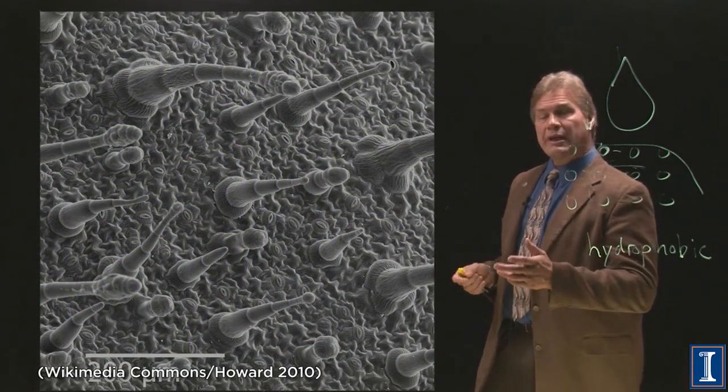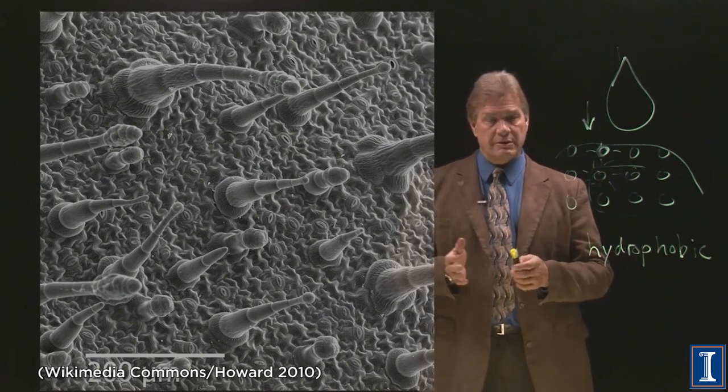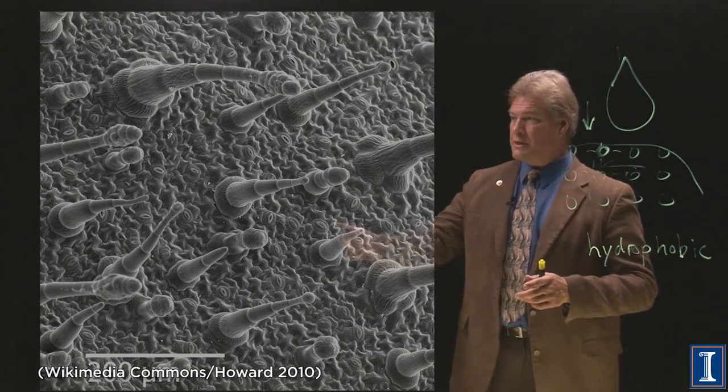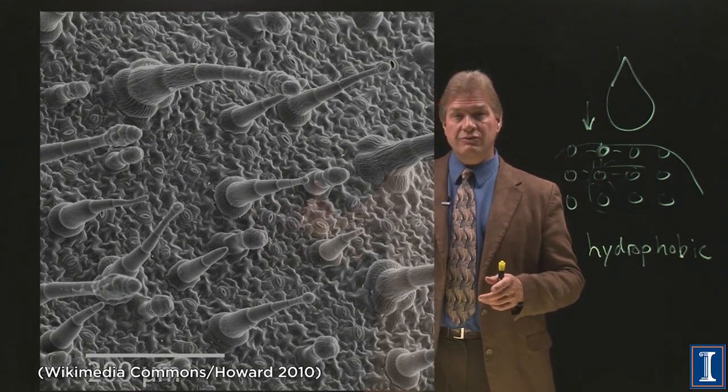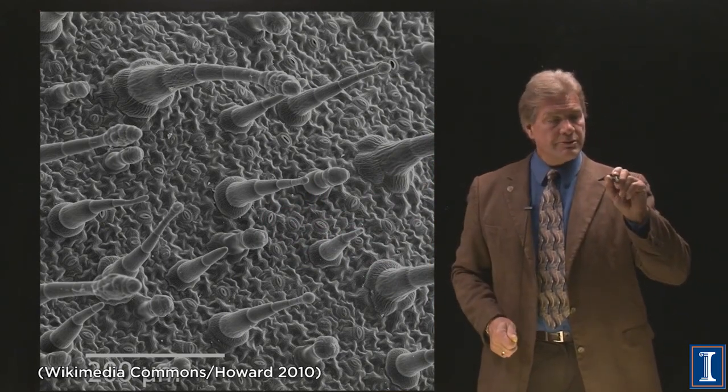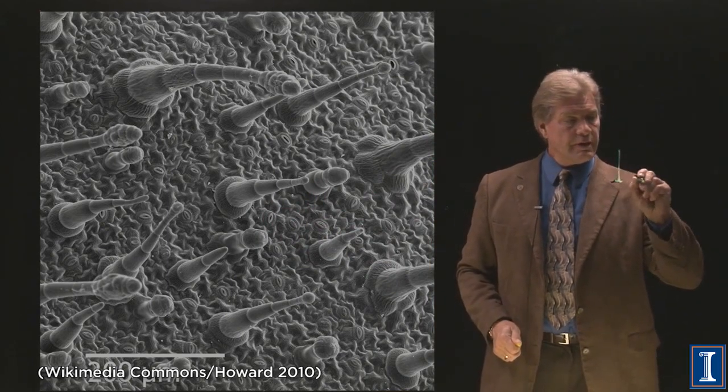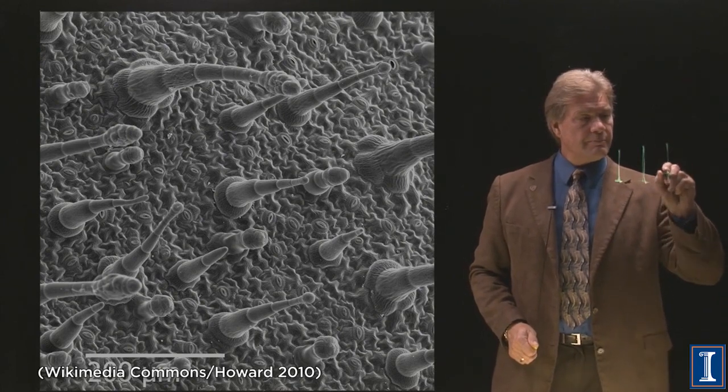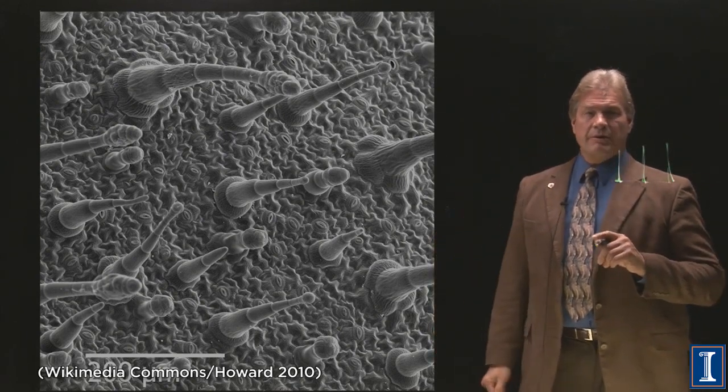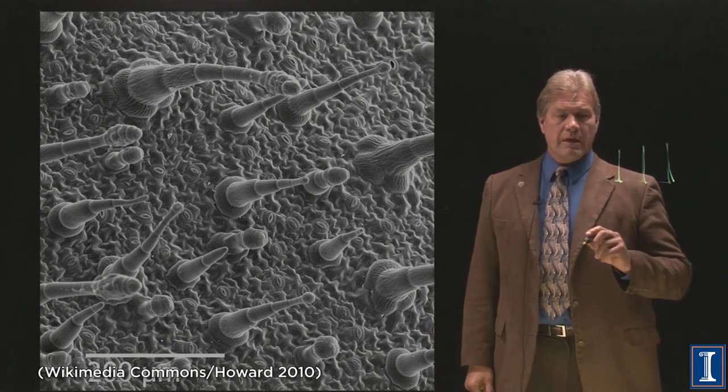If we look at an electron micrograph of this, an actual electron microscope picture, you can see that the lotus leaf has a lot of these tendrils sticking up. So if we think about what's going on here, imagine you have a surface that has these little tips going up. Now, how is a water droplet going to interact with this?